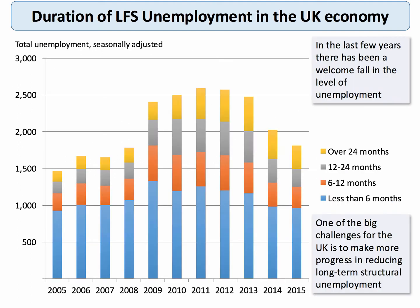The other big disaggregation is how long people are unemployed for. This chart shows the duration of unemployment in the UK. The blue section represents people who've been unemployed for less than half a year — as we enter 2015, that's just under a million people. The orange, grey and yellow sections above represent people unemployed for at least six months, over a year, and over two years. Getting the long-term, often structurally unemployed, back into work is one of the key challenges in the labour market.